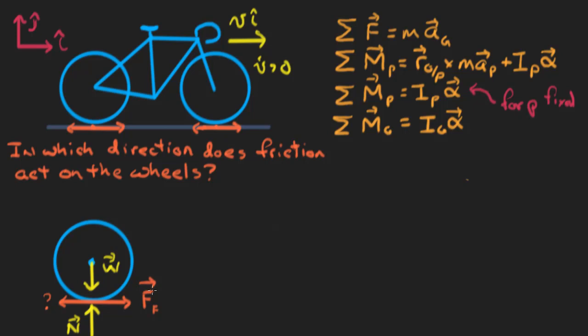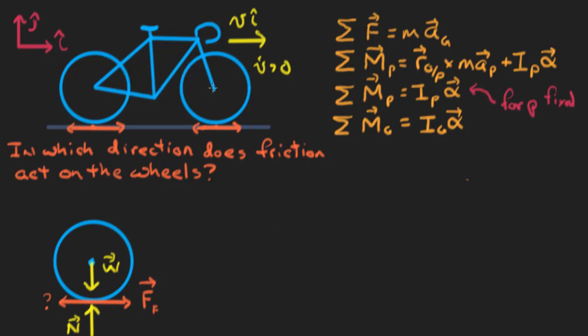Are we done with all the forces? I'd argue there's one more. Forces come through direct contact — is there something contacting the wheel that's providing a force? The fork on the bicycle, this piece right up here, it's pushing on the wheel. It's pushing down on the wheel and maybe pushing forward on it a bit too. So there is a force from the fork. A fork starts with F and I already called friction F, so I'll call this D — the force from the fork. Those are all the forces on this free body diagram.